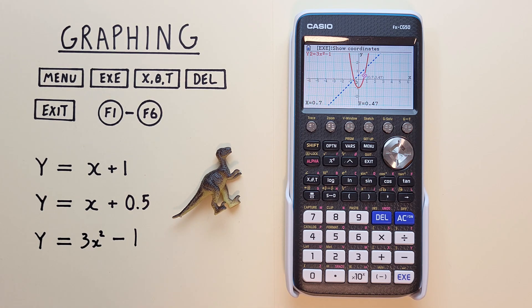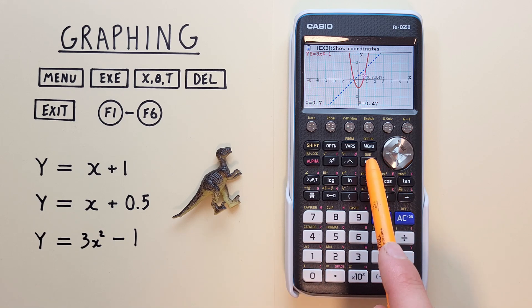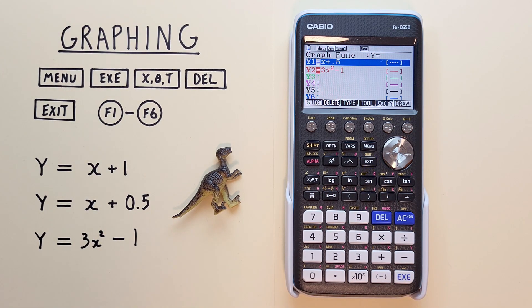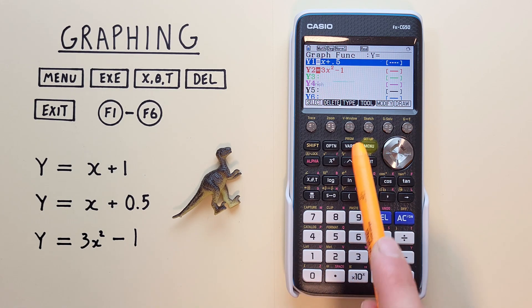If we're done with this, we can go back with the exit key to our graphing function, and if we're completely done with graphing, we can go to the main menu with the menu key.